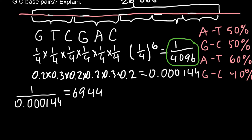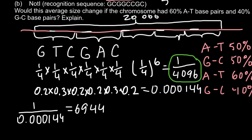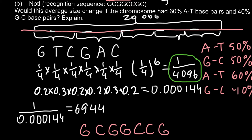Now let's do the same calculation for the second restriction enzyme site. The second recognition sequence is G, C, G, G, C, C, G, C — an 8-base sequence.